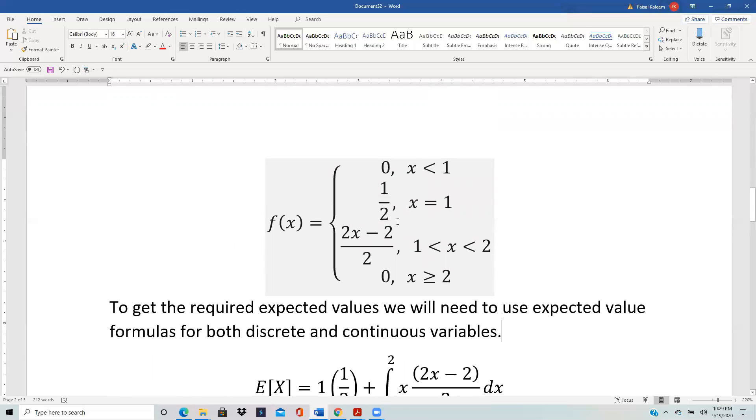So now this is a combination of both discrete and continuous, because what's happening from zero to 1 is a discrete situation and then what's happening in this interval is a continuous situation. So to get the expected values we will need a combination of both discrete and continuous formulas.